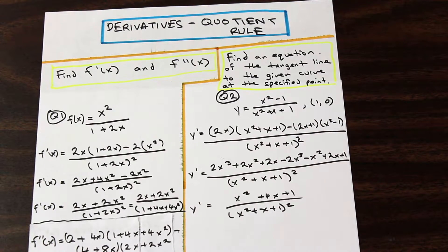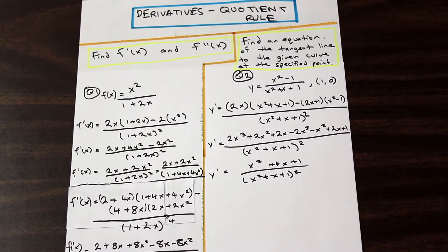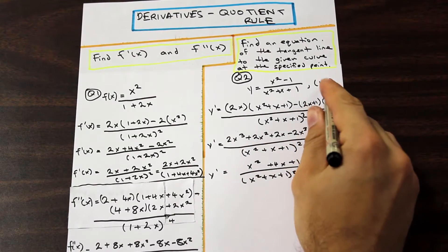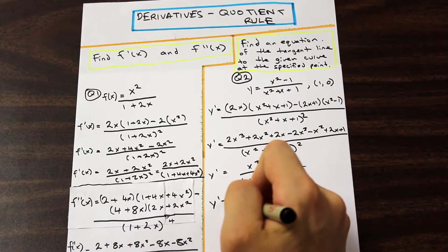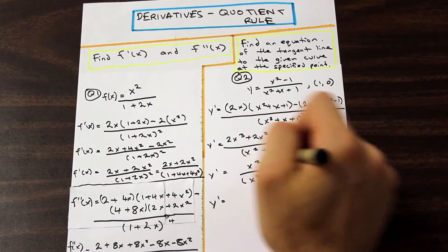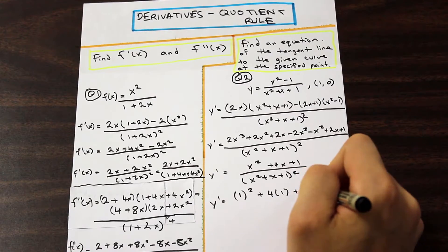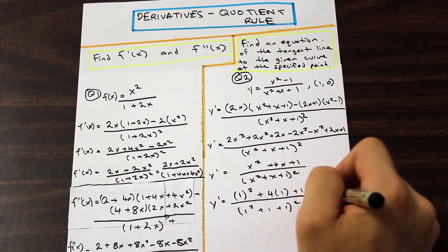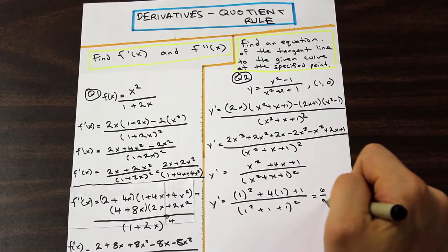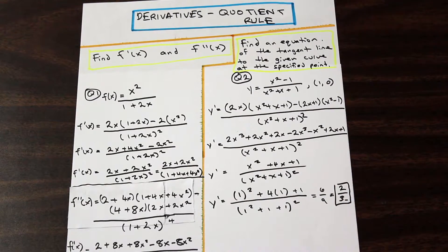That's the derivative of the function. Now we need to find the equation of the tangent line, so let's plug in our point. We have x equals 1, y equals 0. Plugging x equals 1 into the derivative: 1 plus 4 times 1 plus 1 over (1 squared plus 1 plus 1) squared, which gives us 6 over 9, equal to 2 over 3. So 2 over 3 is going to be the slope of our tangent line.